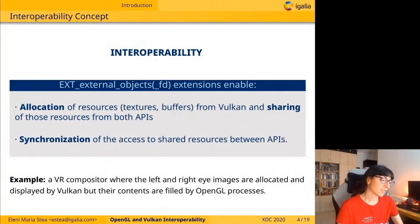An example of an application that would use interoperability is a VR compositor where the left and right eye images would be allocated and displayed by Vulkan, but their contents would be filled by OpenGL processes.